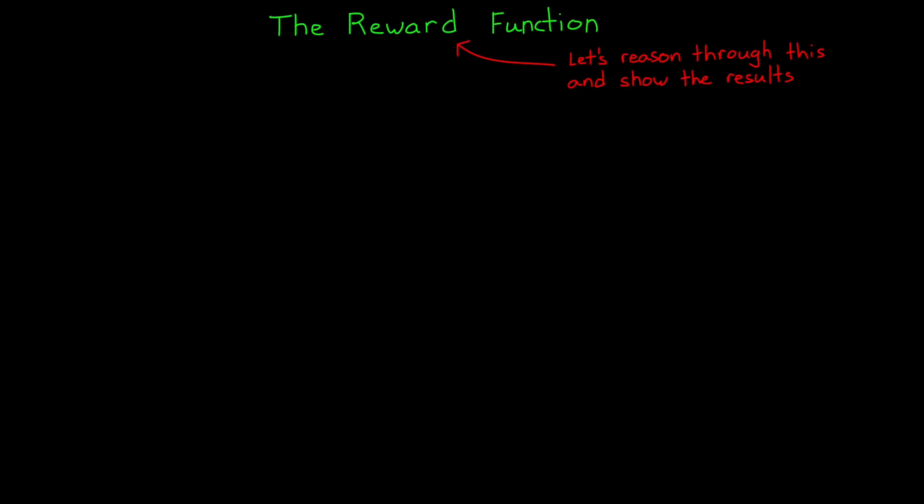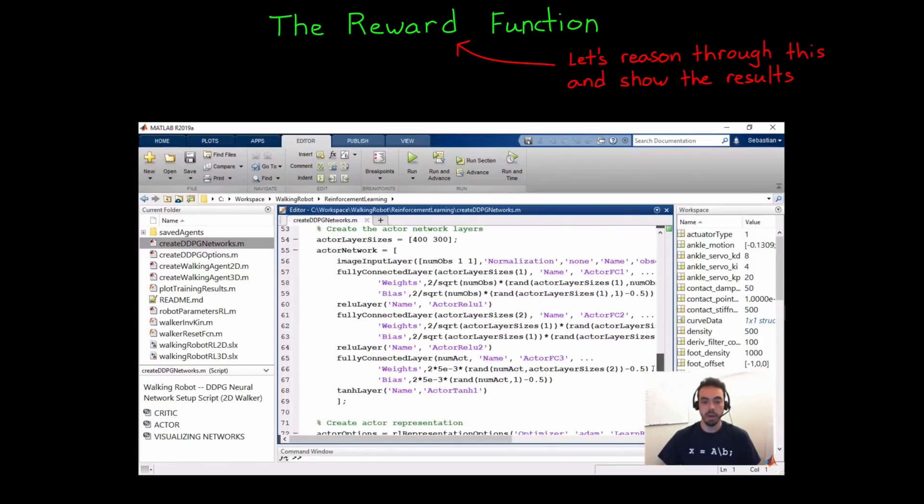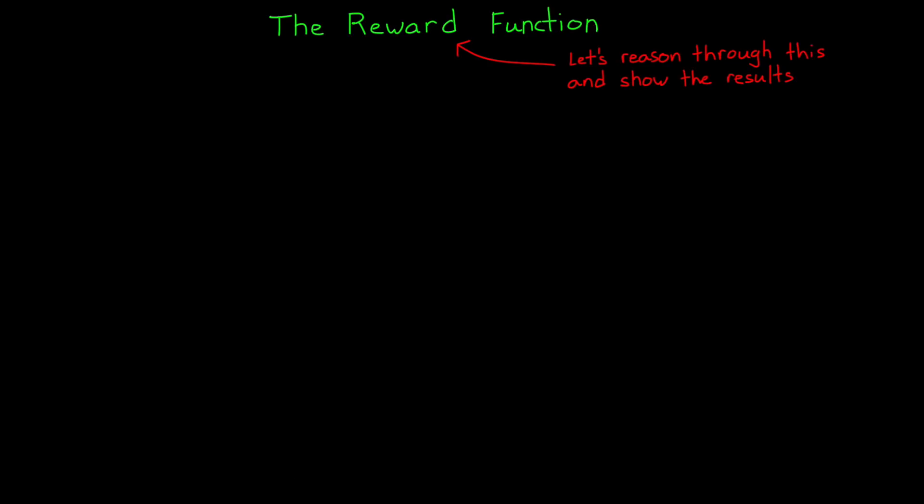And I want to reason through what should exist in the reward function by thinking about the conditions that are important for a walking robot. This might be how you'd approach building up a reward function if you didn't know where to start. Now I'm going to show you the results of training with this function as we create it, so you can see how the changes impact the solution. However, I'm not going to go over how to run the model because there's already a great video by Sebastian Castro that does just that. So if you're interested in trying out all of this on your own, I'd recommend checking out the link in the description below. Alright, so on to the reward. Where to start? We obviously want the body of the robot to move forward, otherwise it's just going to stand there. But instead of distance, we can reward it for its forward velocity. That way there's a desire for the robot to walk faster rather than slower.